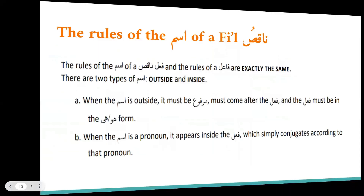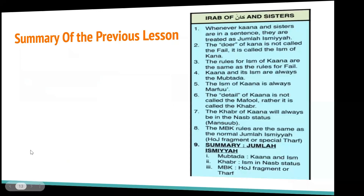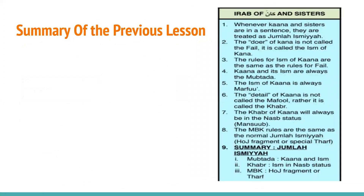Let me go through the summary first. Whenever kana and its sisters are in a sentence, they are treated as jumlah ismiya. The doer of kana is not called fa'al — it is called the ism of kana. If it's the doer of asbaha, then ismu asbaha; if it's the doer of dhalla, then ismu dhalla.